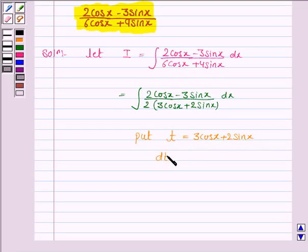So dt is equal to minus 3sinx plus 2cosx, because the derivative of cosx is minus sinx and the derivative of sinx is cosx, into dx.